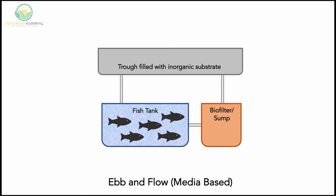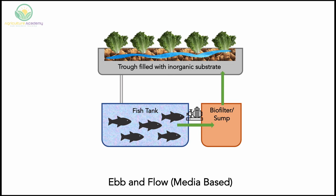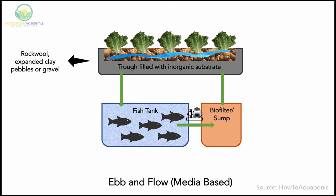In an ebb and flow, also known as a media-based system, a growing trough is filled with an inorganic hydroponic substrate. The plants are supported by the substrate and their nutrient water is pumped into the trough. The water then slowly returns to the fish tank through a siphon valve in the trough. To set up your ebb and flow system you will need: a large trough in which your plants will grow, and an inorganic hydroponic substrate such as rockwool, expanded clay pebbles or gravel.